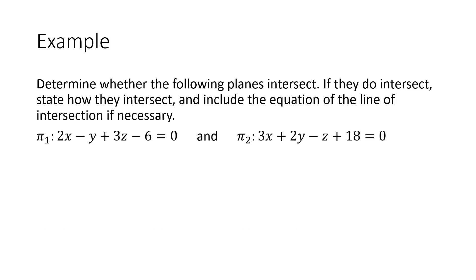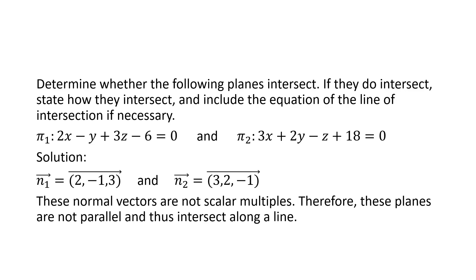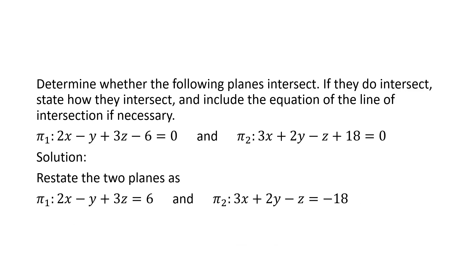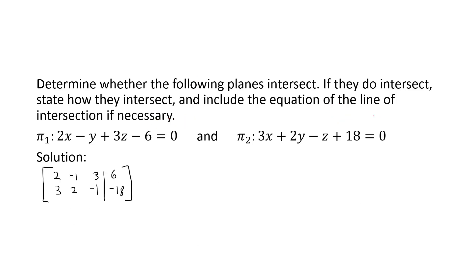The third example has the longest solution — this is the case where you've got two non-parallel planes that intersect along a line. The first thing we do is look at the two normal vectors. The first normal vector is (2, −1, 3) and the second is (3, 2, −1). Since those normal vectors are not scalar multiples, the planes are not parallel and therefore intersect along a line. To determine the equation of the line, I like to create a matrix. I'll restate the planes by putting the constant term on the other side, then create the matrix.